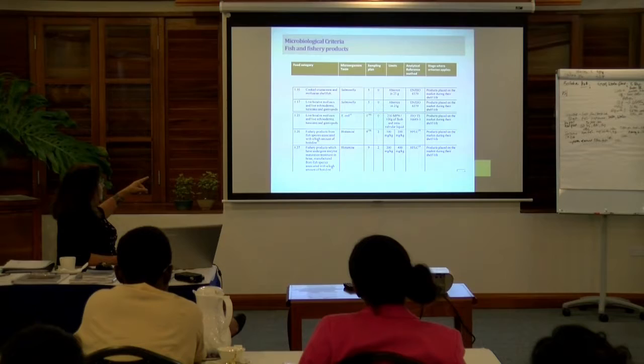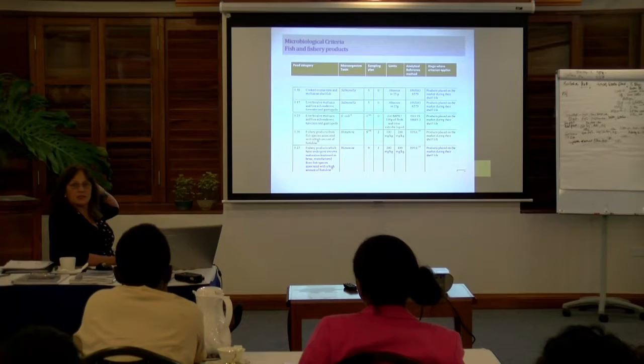For histamines we have a three-class sampling plan. You test nine samples and they all should be between 100 and 200 milligrams per kilogram, but two could exceed the level — but not more. Then the whole consignment is allowed to be placed on the market.